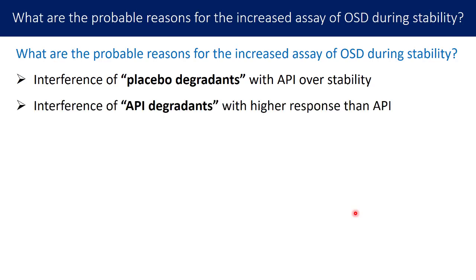The second probable reason is interference of API degradants that have a higher response than the API itself. If the analytical method is not stability-indicating, certain degradants co-eluting with the API peak in HPLC will contribute to a higher combined response. Since these impurities have a higher response than the API, the quantified API content will appear higher, resulting in higher percent assay.